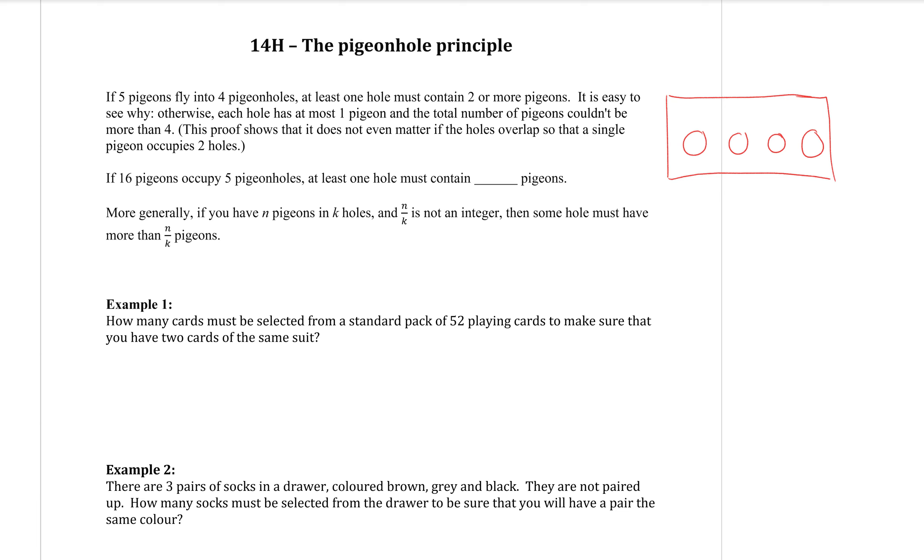So it says there, it's easy to see why. Otherwise, each hole has at most one pigeon, and the total number of pigeons couldn't be more than four. So to further that, if we have 16 pigeons to occupy five pigeonholes, at least one hole must contain how many? Yes, good job. Well done. How did you come up with that answer for everybody else who didn't get that answer?